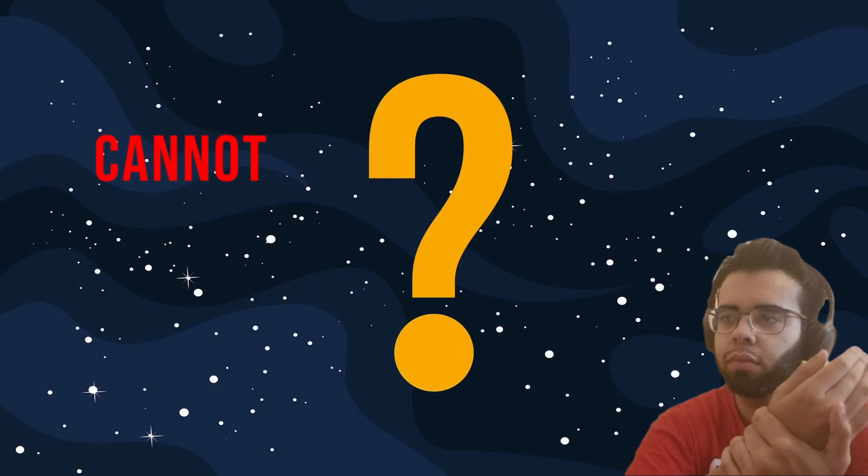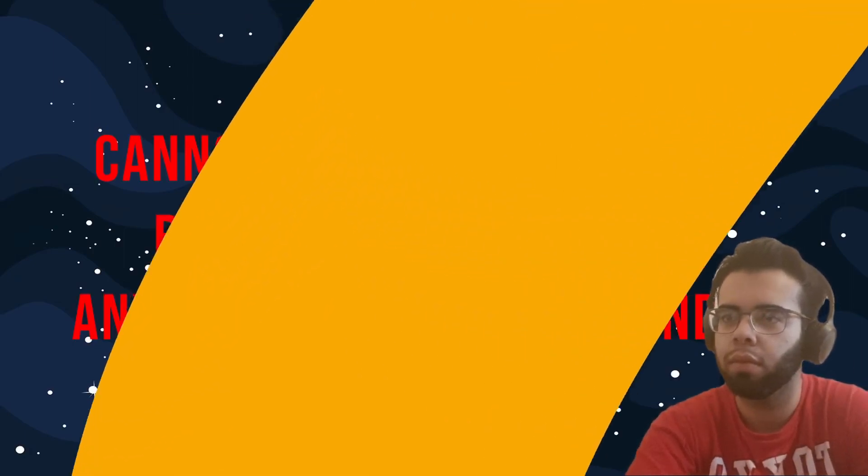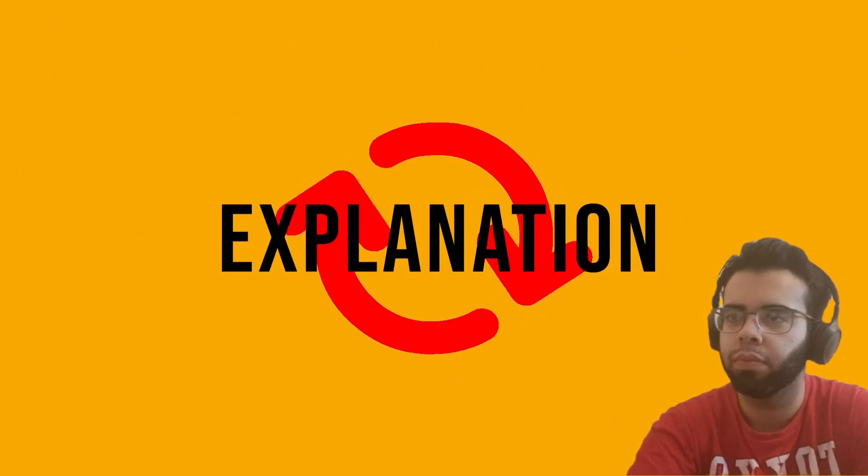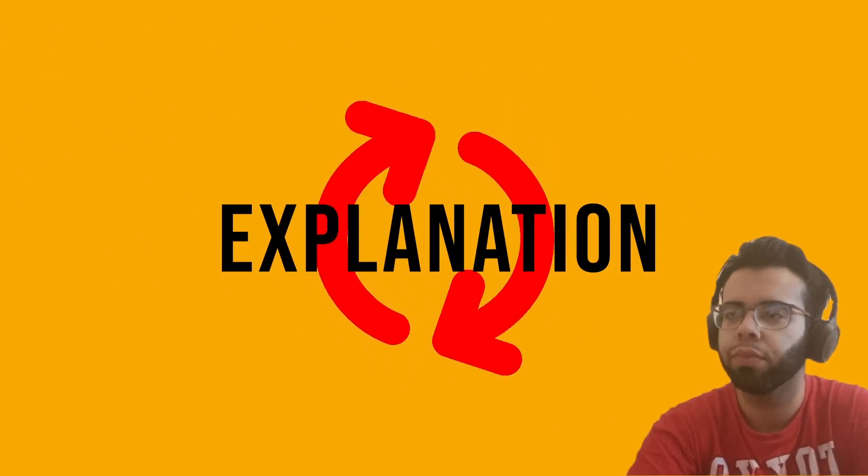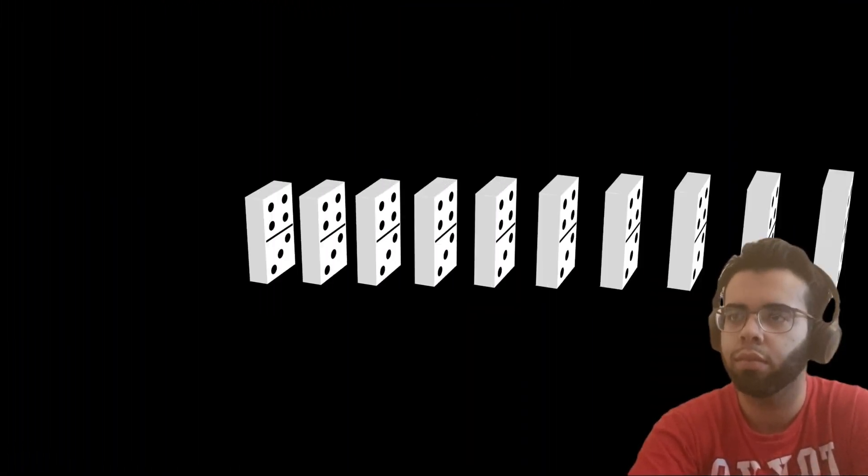The explanation for the universe cannot be anything that is dependent, otherwise we end up in a situation where the explanation requires an explanation, which does not explain anything. Trying to use something that requires an explanation to explain something that requires an explanation will never give us any answers, as it leads to an infinite regress of explanations, which is absurd. Think of a line of dominoes that goes on forever. We conclude that whatever explains the universe must itself be independent.